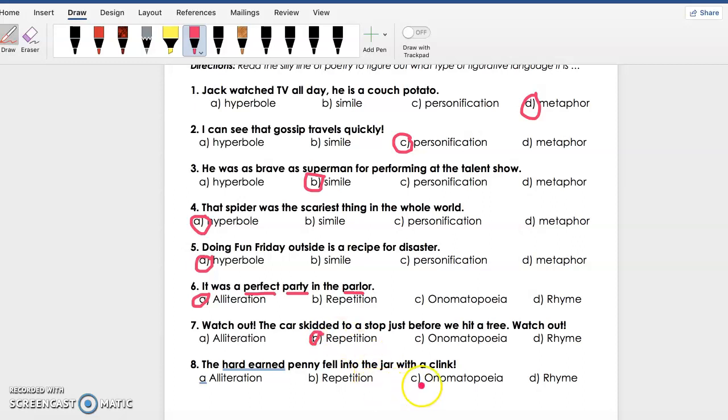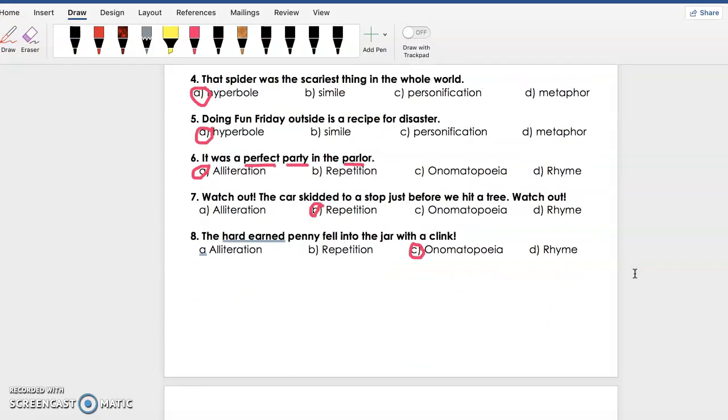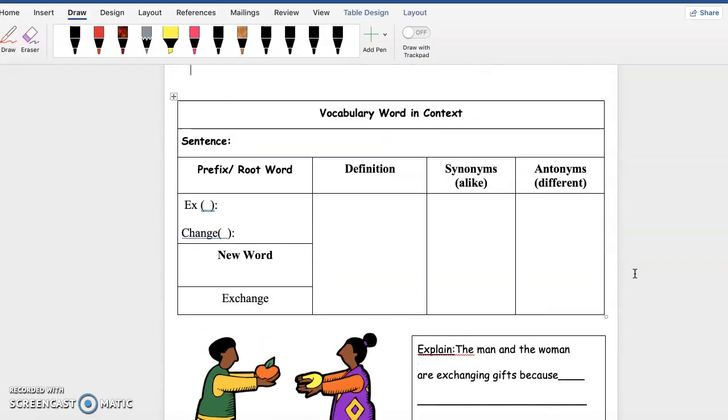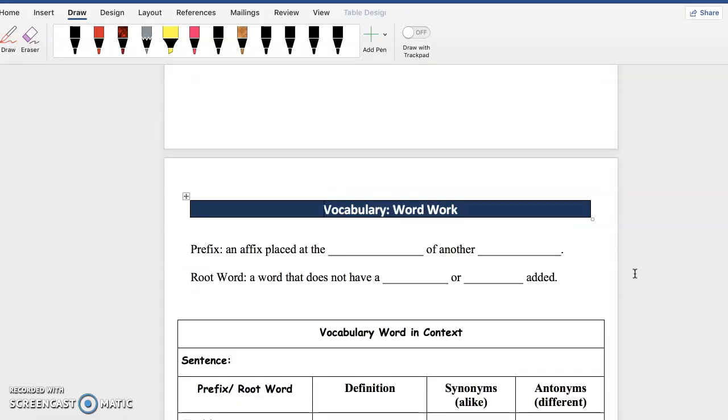And lastly, number eight: The hard-earned penny fell into the jar with a clink. So we know that clink is a sound word, and we know that any sound words are onomatopoeia. Alright, cool! So you guys got 100%, super proud of you. Even if you got one wrong, I know that those were a little bit difficult. So let's go ahead and move on to our vocabulary word work.